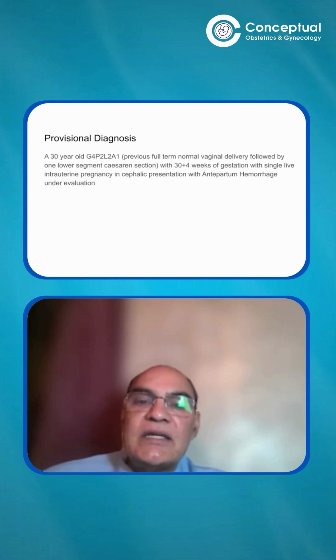There are three, four points from history taking. And then on examination, you can say her general condition is well maintained. Her blood pressure is normal. So that also goes in favor of placenta previa. In case of abruptio, sometimes the general condition is worse than expected.